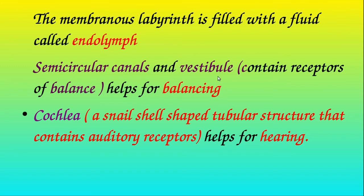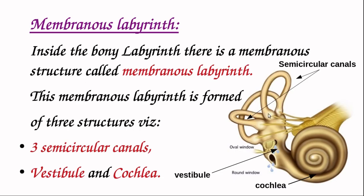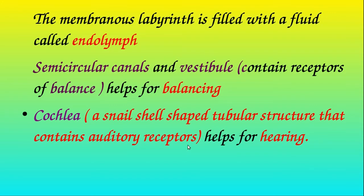The semicircular canals and the vestibule contain receptors for balance and are concerned with balancing. Together, the vestibule and semicircular canals are called the vestibular apparatus. The cochlea is a snail-shell shaped tubular structure that contains auditory receptors and is the hearing organ. So the cochlea is responsible for hearing, while the semicircular canals and vestibule are responsible for balancing.